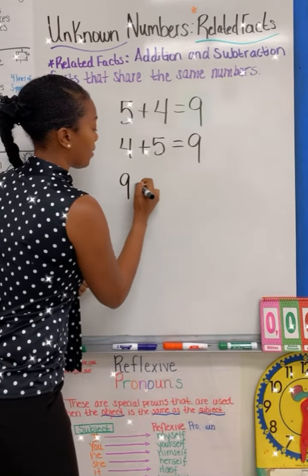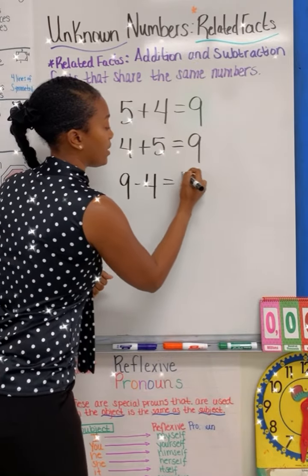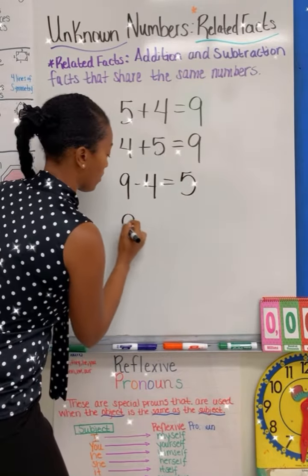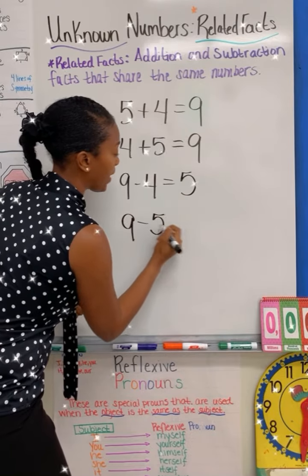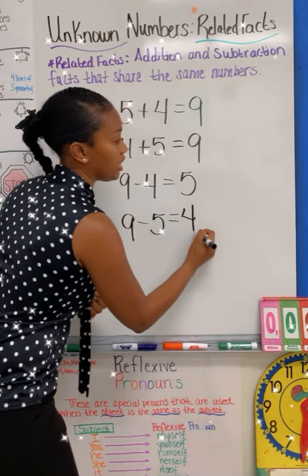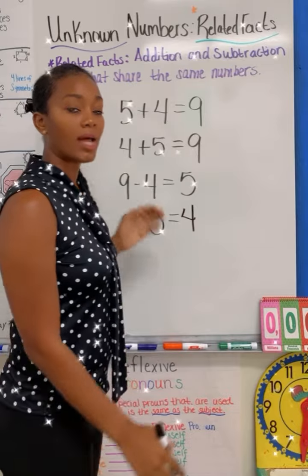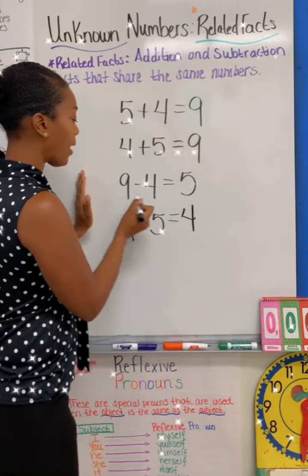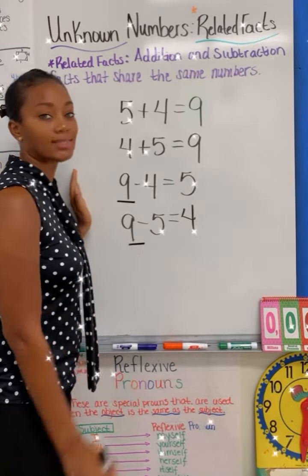And that is nine minus four is equal to five, or nine minus five, which is equal to four. But when I use subtraction, my larger number has to come first.